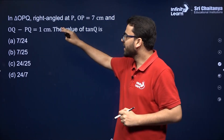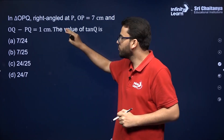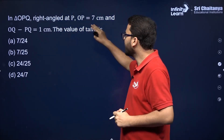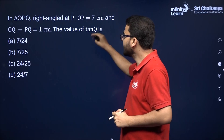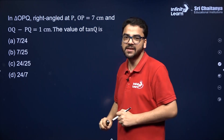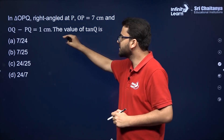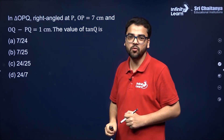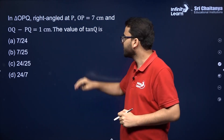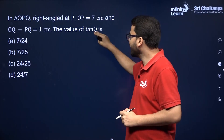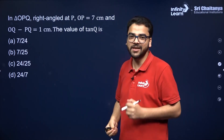In triangle OPQ, right angled at P, OP is equal to 7 cm and OP minus PQ is equal to 1 cm. You have to find the value of tan Q.